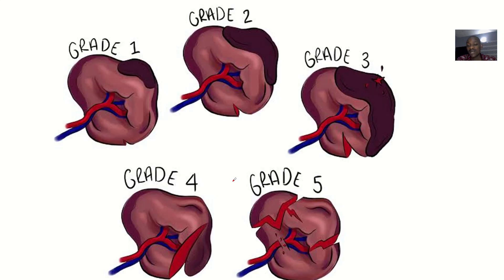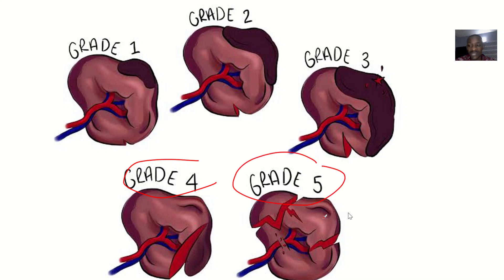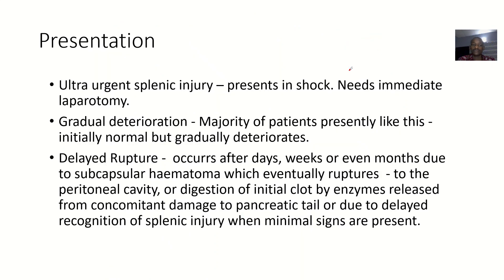Sometimes a total removal of the spleen, which is splenectomy, is necessary. Splenectomy will be necessary in grade 4 or grade 5 splenic injury, where there is severe damage to the spleen beyond repair, so you just have to remove the whole spleen. Grade 1, grade 2, and grade 3 you can repair.